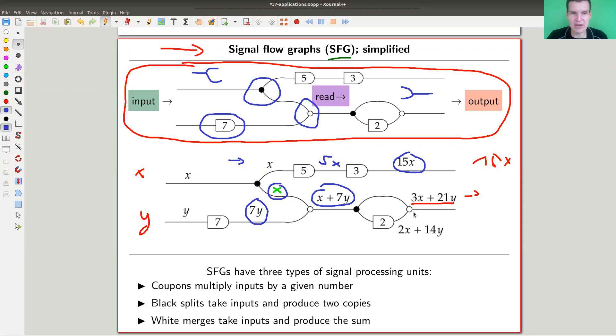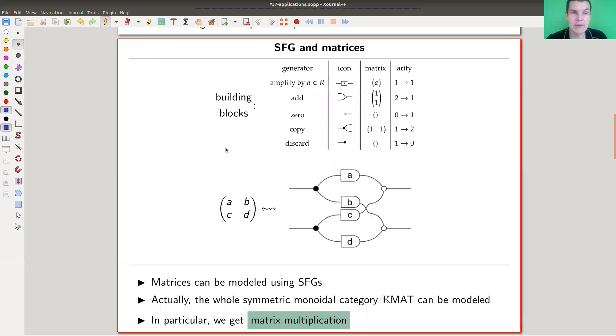You can associate a certain calculation to a certain graph and a certain graph to a certain calculation. That's the whole idea of those signal flow graphs. The name already suggests that these are signals flowing here. The point is why they are so applicable is that they can model matrix multiplication.